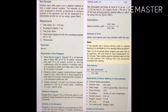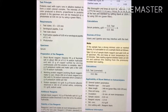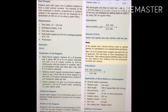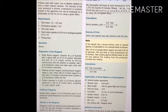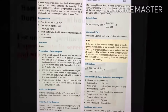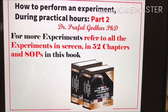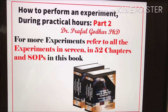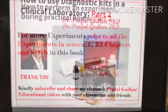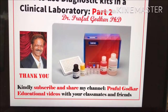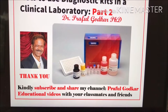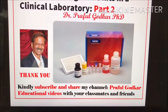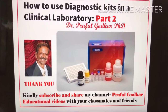Now write down the experiment in the journal as shown on this page, along with the sample report, and take the signature of your supervisor. For more experiments, refer to all the experiments in 52 chapters and SOPs in this book. Do not forget to subscribe and share my channel and all the videos on Profile Worker Educational Videos with all your classmates and friends. Thank you.